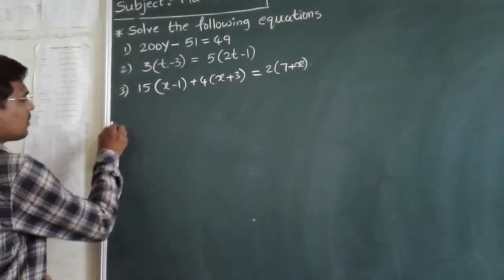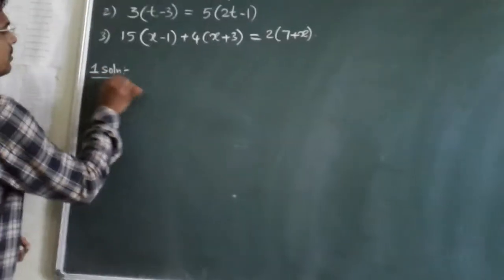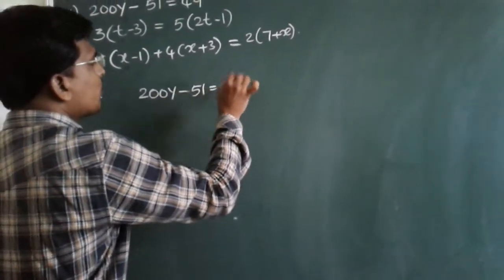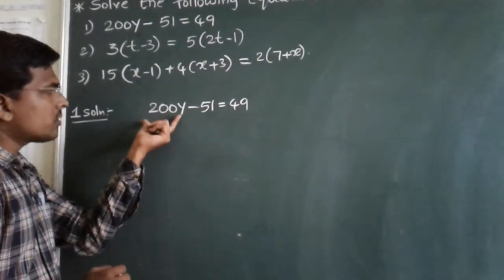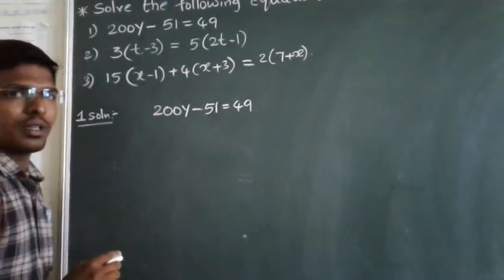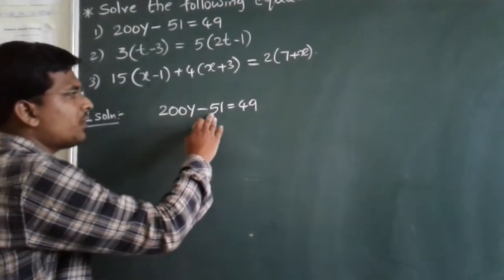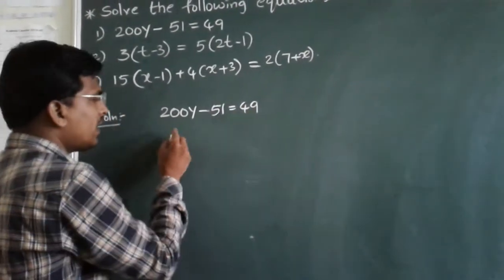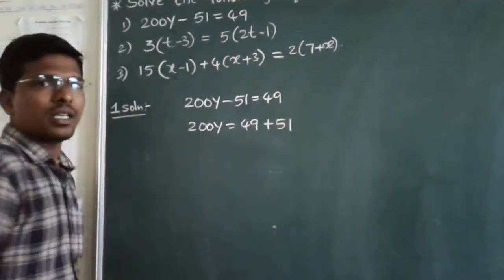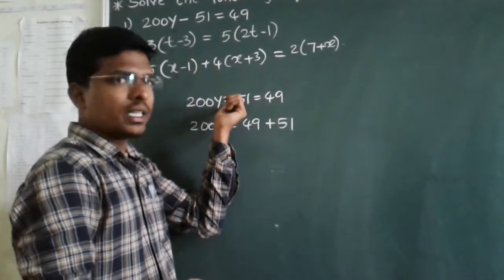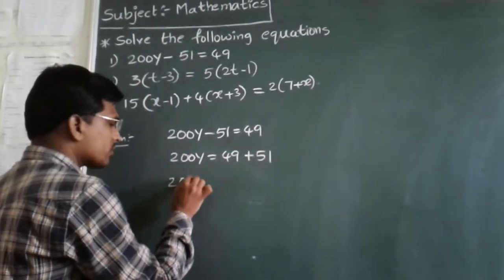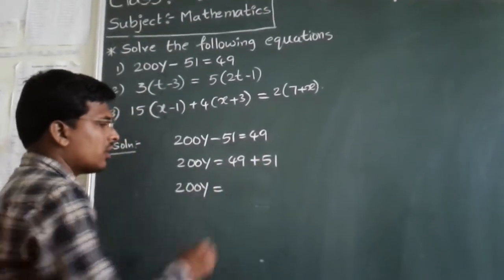First solution: 200 times of y minus 51 is equal to 49. To find the value of y, I am sending minus 51 to the right hand side using transposition. When a minus quantity goes to the right hand side, it becomes a plus quantity. So 200y equals 49 plus 51, which is 100.